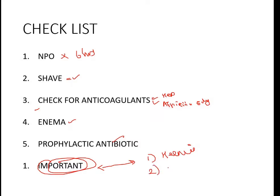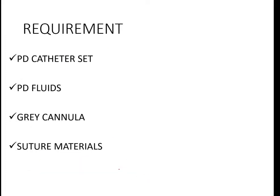Another important step is to examine the patient for any hernia — inguinal hernia or any defects in the anterior abdominal wall — and the patient's cardiovascular status has to be examined before the procedure.